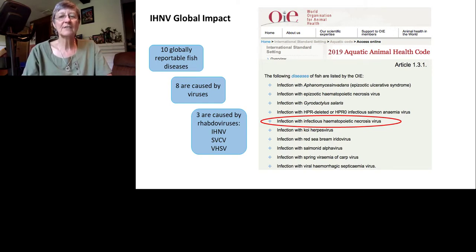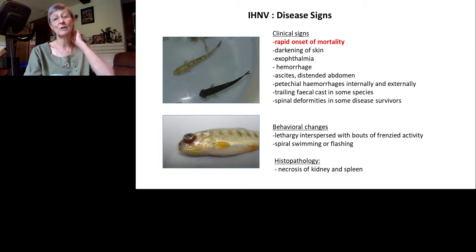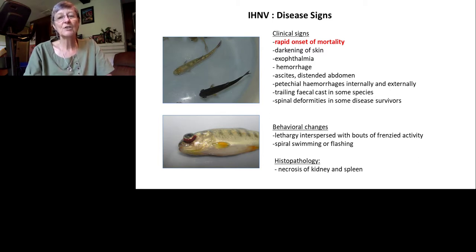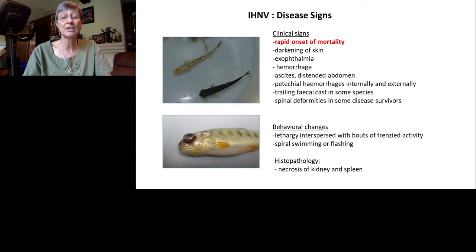When IHN infects fish, the first thing typically noticed is rapid onset of mortality. As the disease progresses, signs include darkening of the skin, exophthalmia — a bulging of the eyes due to fluid imbalance — hemorrhage, and ascites. Behavioral changes include lethargy interspersed with bouts of frenzy, spiral swimming, or flashing. Histopathology shows necrosis of the kidney and spleen.